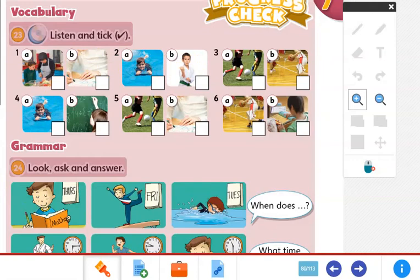Number 1: Learn to cook. You have to choose, is it A or B? Number 2: Have swimming lessons. Number 3: Practice basketball. Number 4: Study maths. Number 5: Learn to draw. Number 6: Study English.